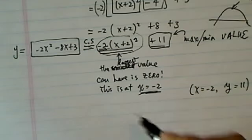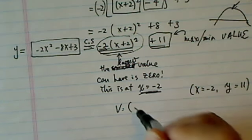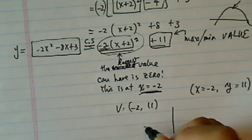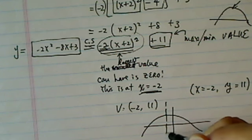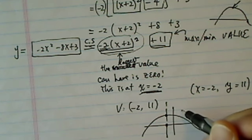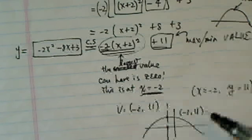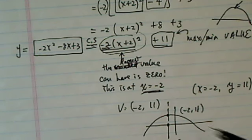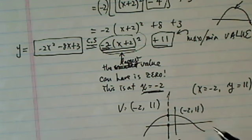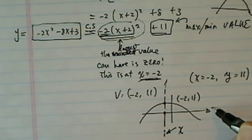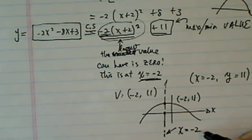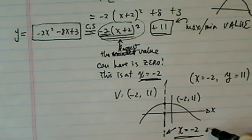So our vertex is minus 2, 11. And when you draw it out, the curve looks like that. Here's axis of symmetry. So vertex is minus 2, 11. And for this line, axis of symmetry that goes through this function is when x equals minus 2. That's the equation of the line. Here's axis of symmetry.